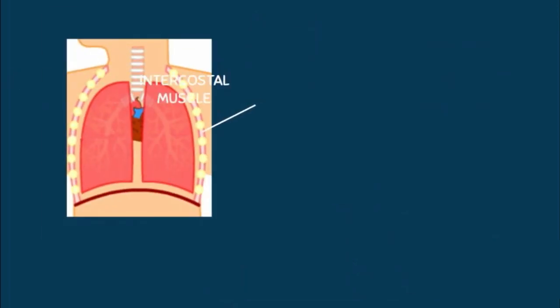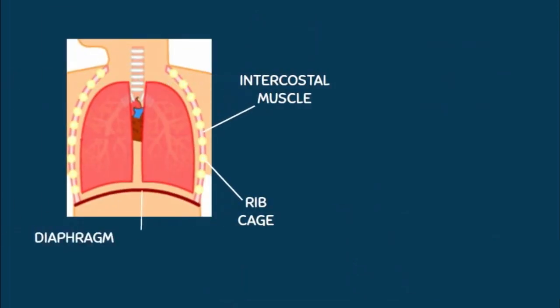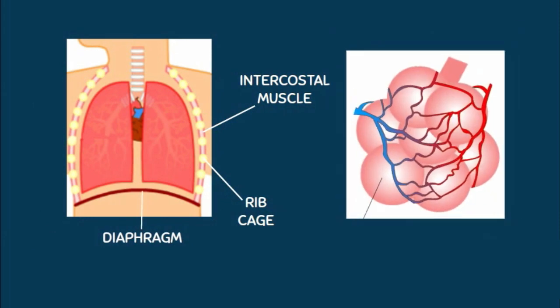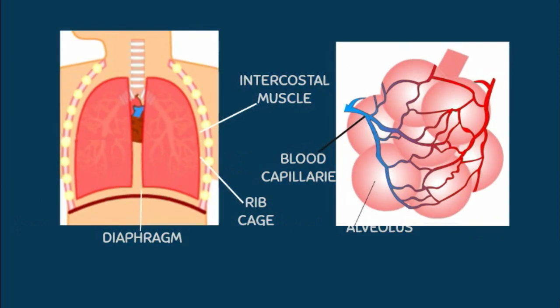Other than the listed parts, we also have the intercostal muscle, rib cage, and diaphragm in the pulmonary system. Our alveoli are also surrounded by blood capillaries.